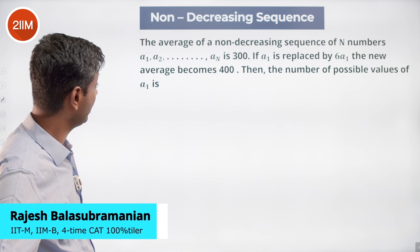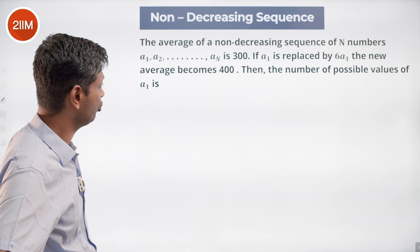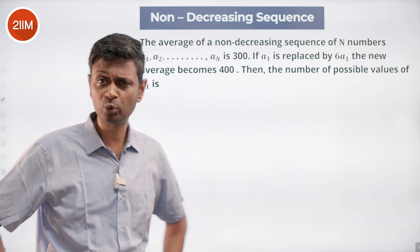The average of a non-decreasing sequence of N numbers a₁, a₂, a₃, ..., aₙ is 300. If a₁ is replaced by 6a₁, the new average becomes 400. The number of possible values of a₁ is a nice, beautiful question.